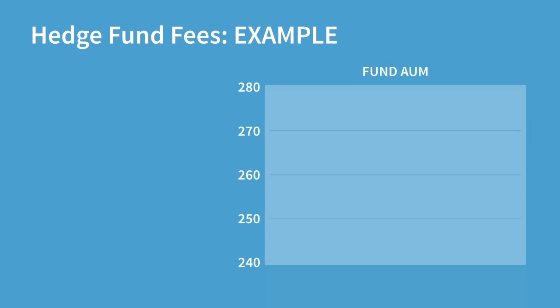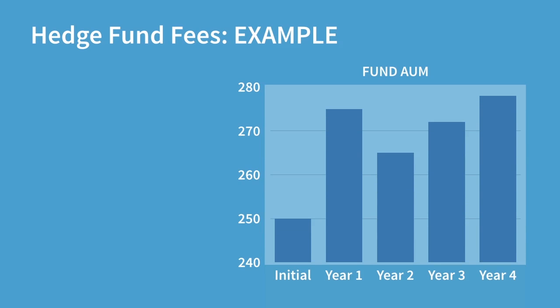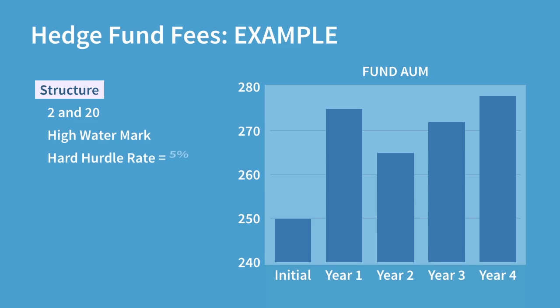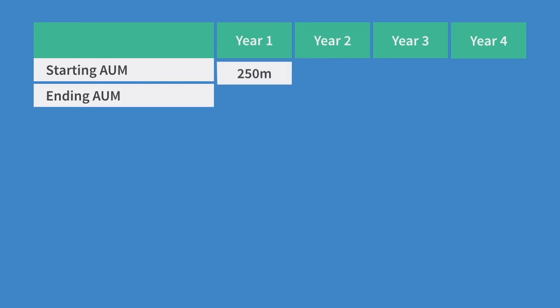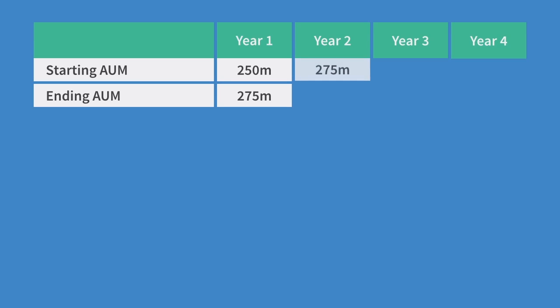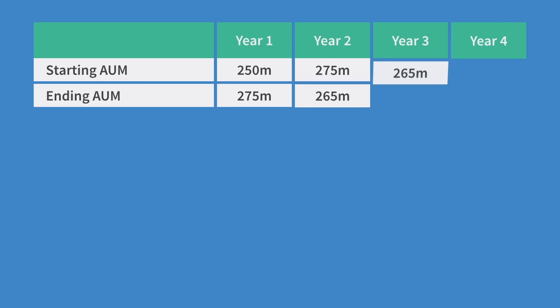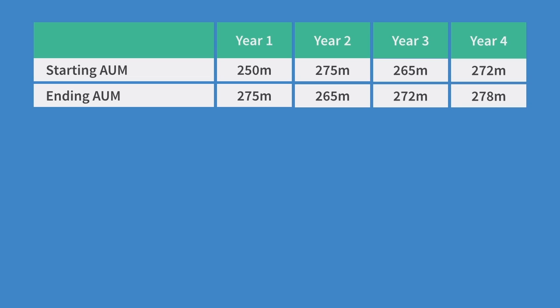Let's take an example on calculating these hedge fund fees. Here we have a hedge fund with a 2 and 20 fee structure, a high watermark provision, and a hard hurdle rate of 5%. We are asked to calculate the fees paid to management at the end of each year for 4 years. The fund starts out with 250 million and in its first year it makes 25 million and finishes on 275 million. In the second year they fall to 265, then bounce back up to 272, before at the end of year 4 they land on 278.